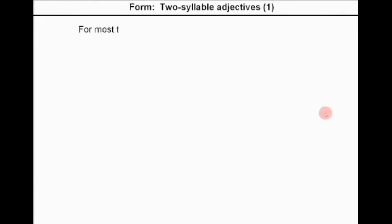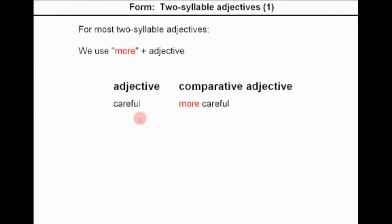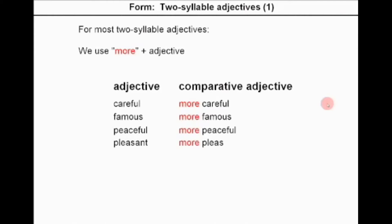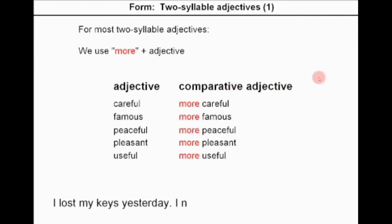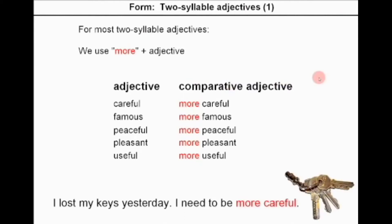Now let's turn to two-syllable adjectives. For most two-syllable adjectives, we use the word 'more' plus adjective. For example: careful → more careful, famous → more famous, peaceful → more peaceful, pleasant → more pleasant, useful → more useful. Example: I lost my keys yesterday. I need to be more careful.